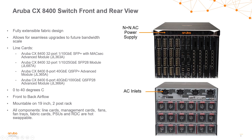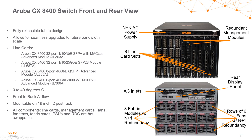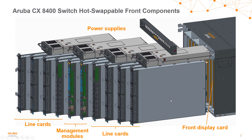Looking a little closer at the switch, the power supplies are inserted behind the bezel on the front of the switch so you can add and remove power supplies from front access, while the inlets for the power supplies are in the back. Here we have the eight line card slots on the front of the switch and in the center are the two slots for the management modules. On the back, the fabric modules are hidden behind the fan trays. This exploded design shows the power supplies being inserted behind the bezel, as well as the line cards and the management modules.